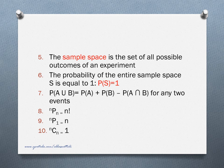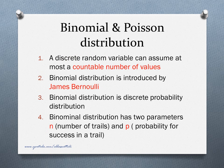N permutation N is equal to N factorial. N permutation 1 is equal to N. N combination N is equal to 1. Permutation and combination are ways of arrangement. Permutation is with reference to order, and combination is without reference to the order of arrangement.